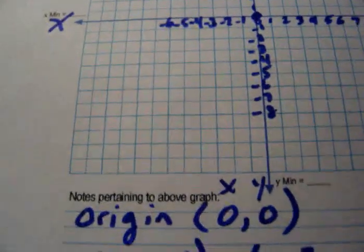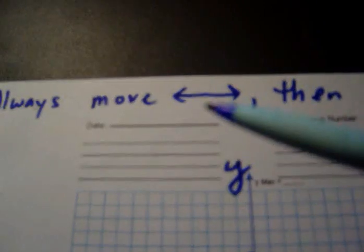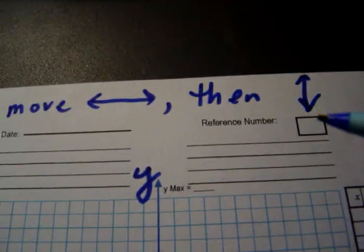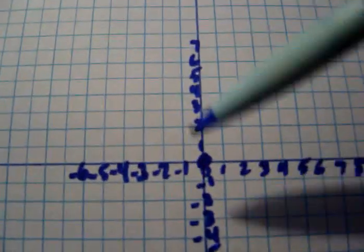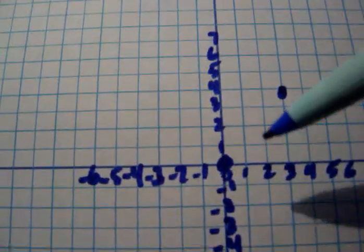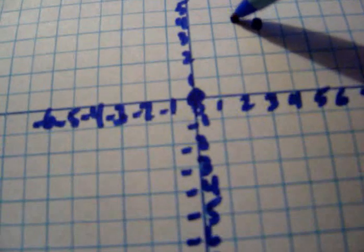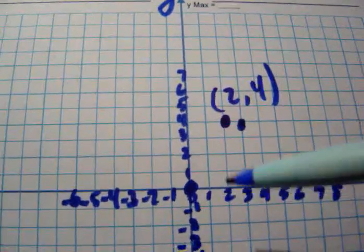With that in mind, let's begin plotting some points — some ordered pairs. Start at the origin. You always move left to right first, and then you move up and down. Left is negative, right is positive. Up is positive, down is negative. The first one we're going to try is two comma four. Two is in the x direction, four is in the y direction. Start at your origin, go over to two, and then up to four. Two on the x-axis, up four in the y direction — we're right here at two comma four.